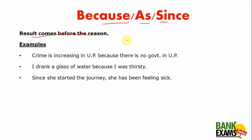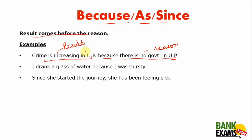We use them when the result comes before the reason. For example: 'Crime is increasing in UP because there is no government in the state.' Here, 'crime is increasing in UP' is the result, and 'there is no government in UP' is the reason — result comes before reason, so we use 'because'. Another example: 'I drank a glass of water because I was thirsty.'